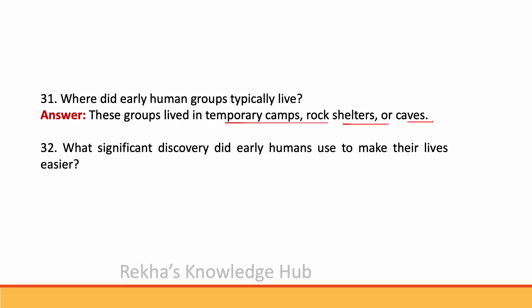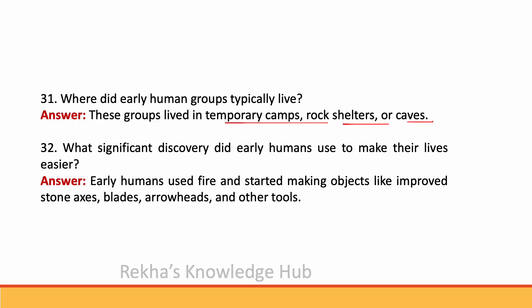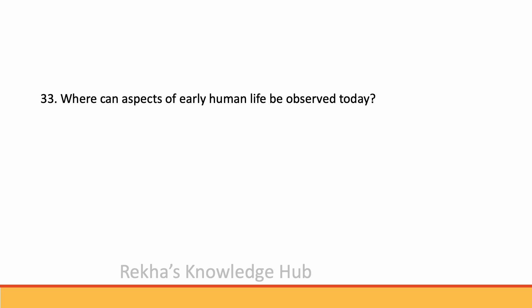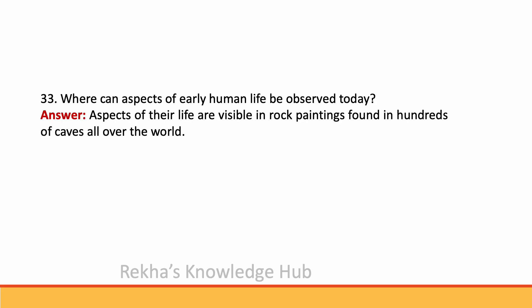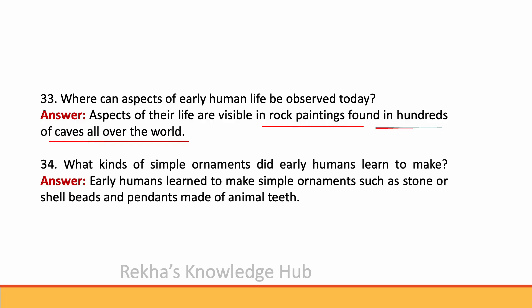What significant discovery did early humans use to make their lives easier? Early humans used fire and started making objects like improved stone axes, blades, arrowheads and other tools. Aspects of their life are visible in rock paintings found in hundreds of caves all over the world. Early humans also learned to make simple ornaments such as stone or shell beads and pendants made of animal teeth.